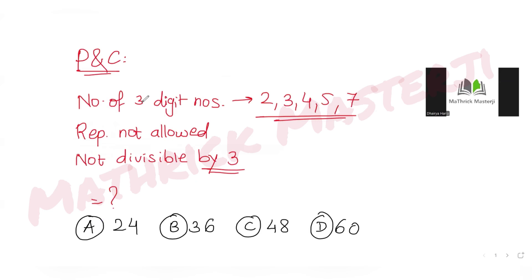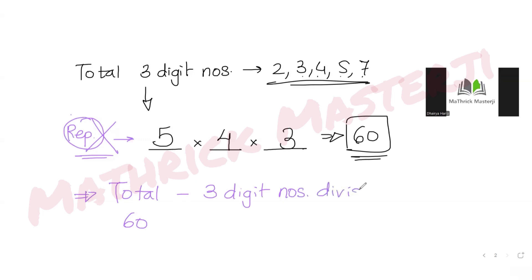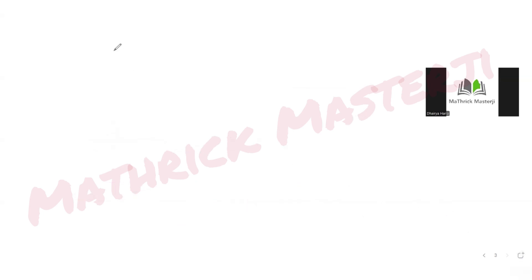But the question asks for three-digit numbers that are not divisible by three. To find this, we'll use the complementary approach: we already know the total is 60, so we subtract the count of three-digit numbers that are divisible by three from 60 to get our answer.